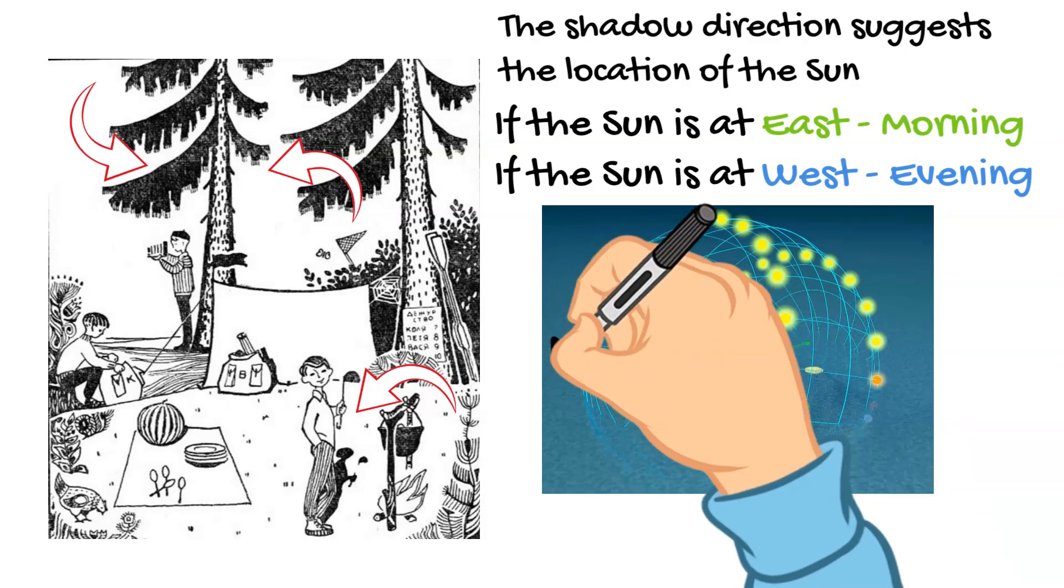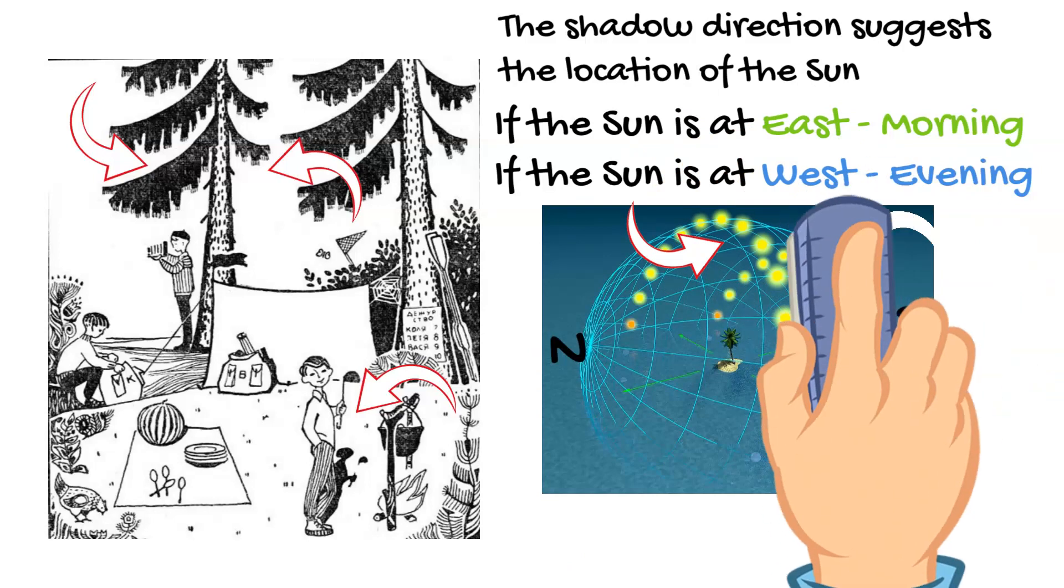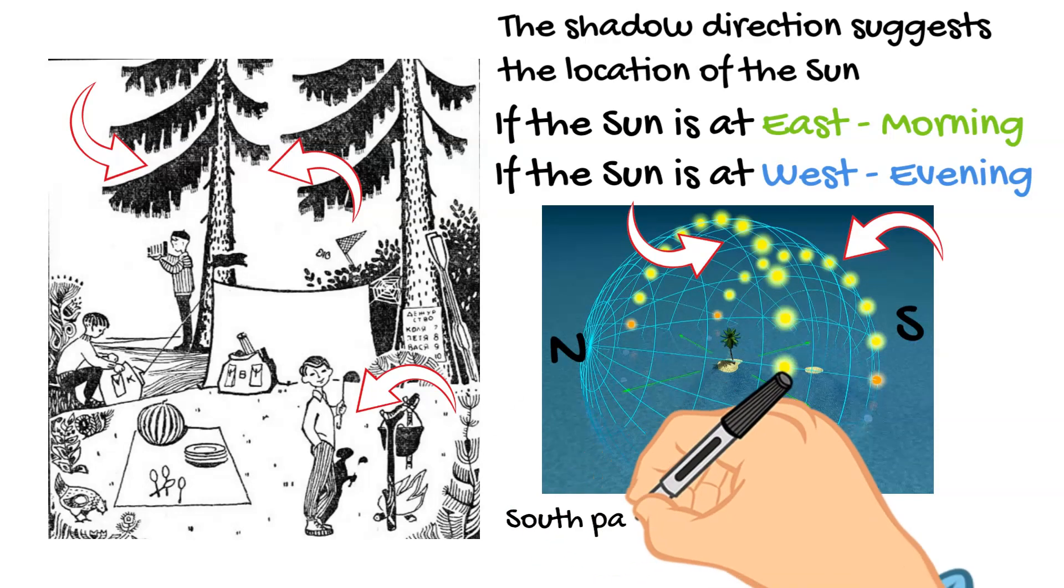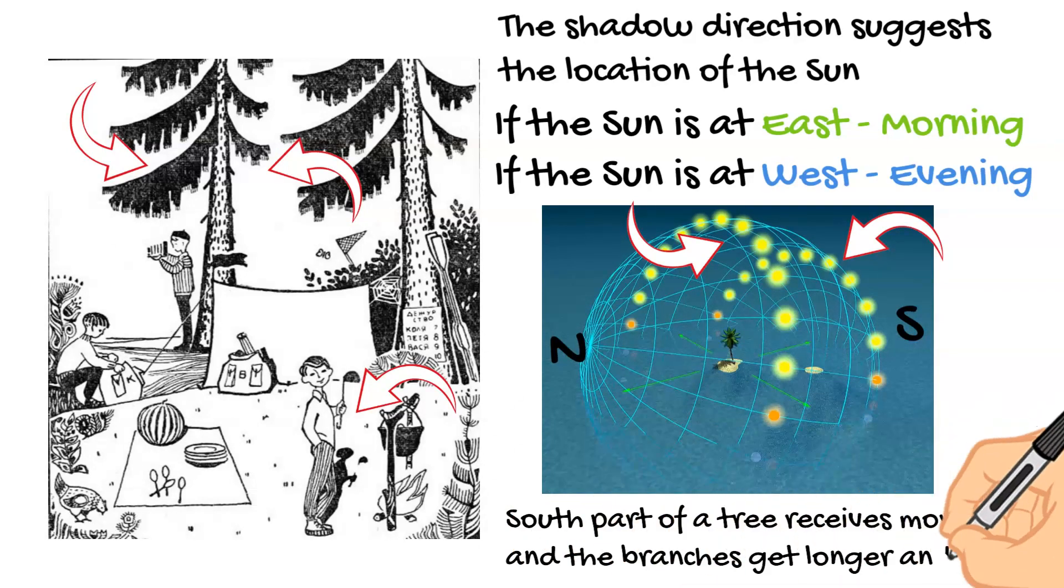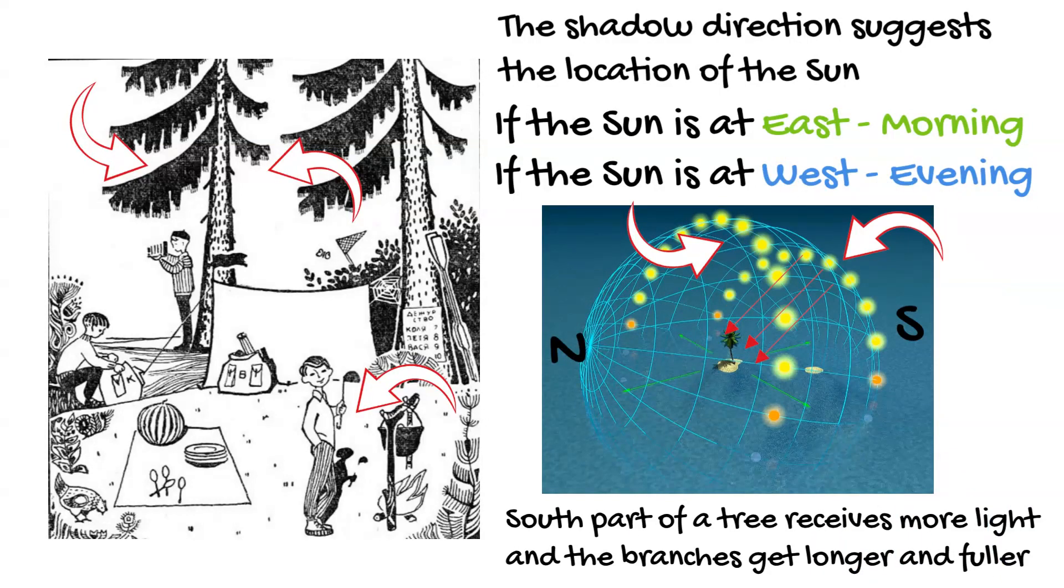If we assume that we are at Northern Hemisphere, then, as you can see, the sun will peak south of overhead point. Therefore, the sun just spends most of its time in the southern part of the sky for Northern Hemisphere. Therefore, the south-facing part of the tree, for instance, the Spal, will receive more light and, ultimately, will have longer and fuller branches.